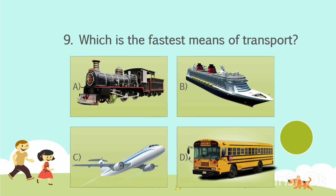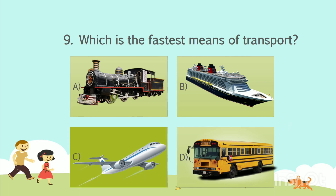Question No. 9: Which is the fastest means of transport? Option A: Train. Option B: Ship. Option C: Aeroplane. Option D: Bus. Your time starts now. The answer is Option C: Aeroplane.